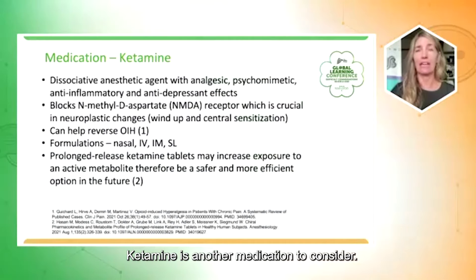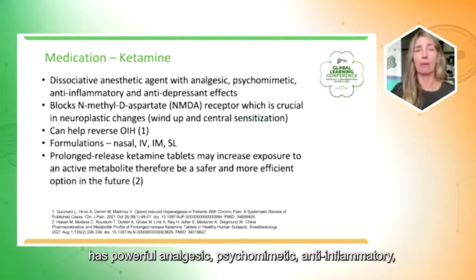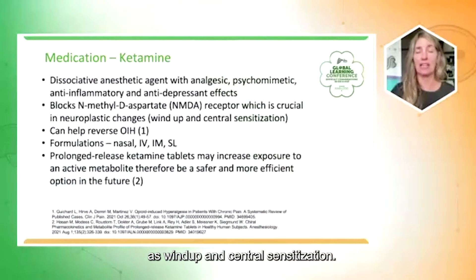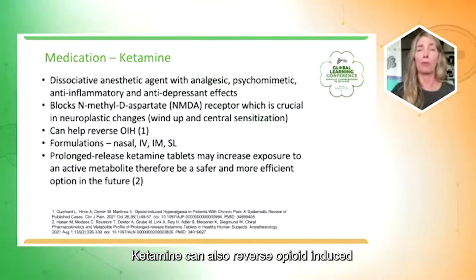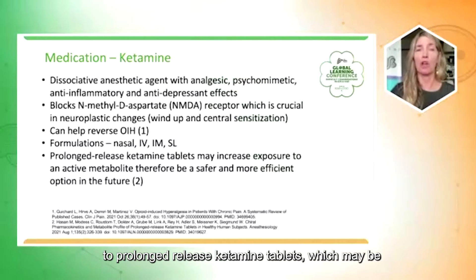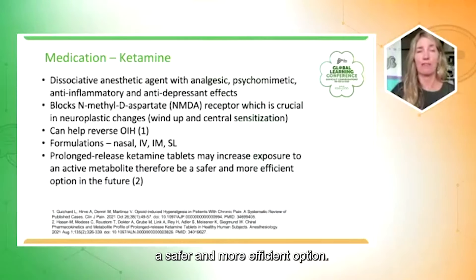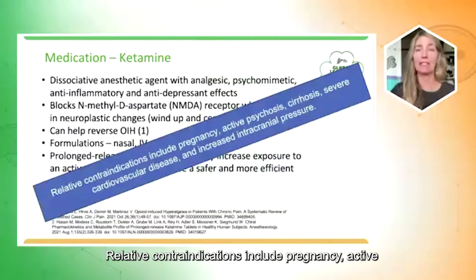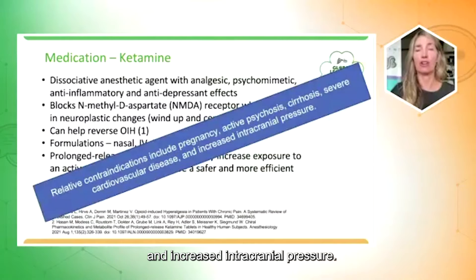Ketamine is another medication to consider. It produces dissociative anesthesia but has powerful analgesic, psychomimetic, anti-inflammatory, and antidepressant effects. It blocks the NMDA receptor, which is crucial in neuroplastic changes such as wind-up and central sensitization. Ketamine can also reverse opioid-induced hyperalgesia — hyperalgesia being when something normally a little painful becomes very painful — and needs to be administered bypassing the gastrointestinal tract. In the future, hopefully we will have access to prolonged-release ketamine tablets. Relative contraindications include pregnancy, active psychosis, cirrhosis, severe cardiovascular disease, and increased intracranial pressure.